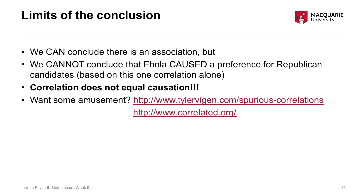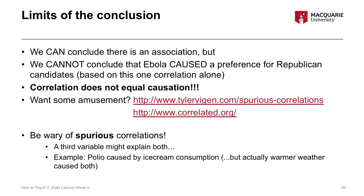For a little bit of entertainment, if these lectures aren't grabbing you as much as they could be, have a look at these two websites. I've got a couple of slides from the first website on spurious correlations — they are very amusing demonstrations of this faulty correlation-causation problem. The important point here is that just because two things are correlated doesn't mean one causes the other. This is the concept of spurious correlations.